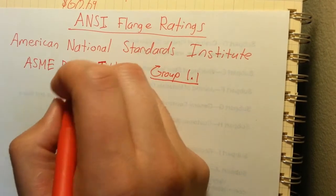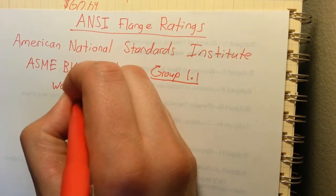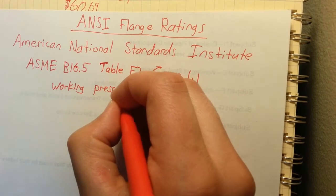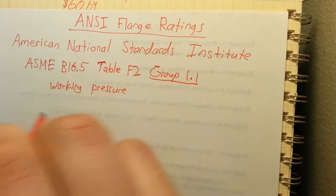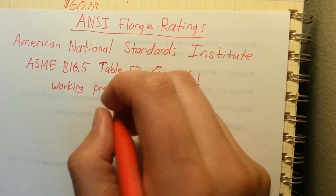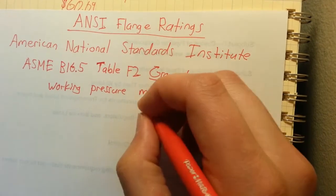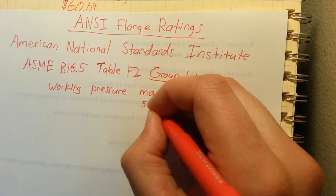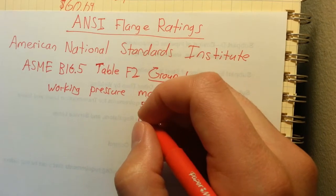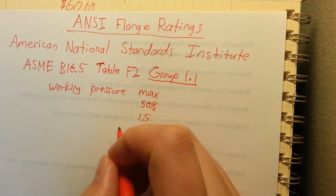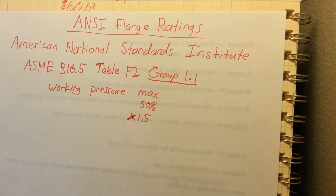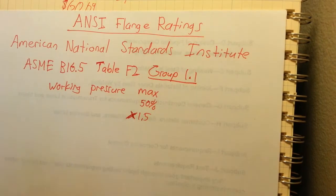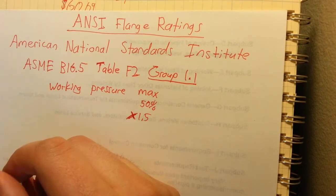So this table gives you the working pressure of the different ANSI class ratings of flanges. The working pressure is not the same as the maximum pressure that it can actually take. The max pressure is 50% higher. So you're going to multiply it by 1.5. And they do that so you can hydro test the pipe bonds without ruining the flanges. So the maximum rating they can handle is actually 1.5 times whatever is listed in the table here.